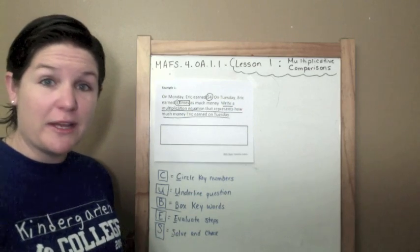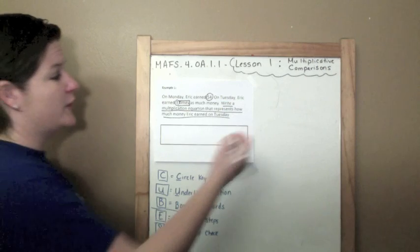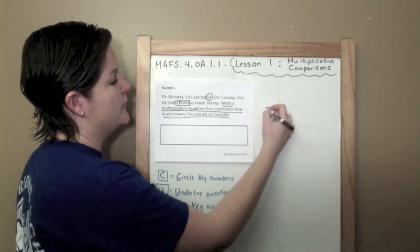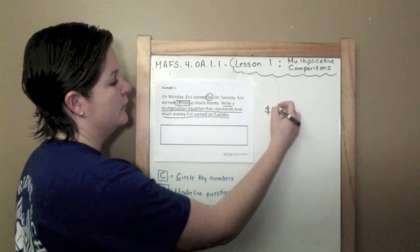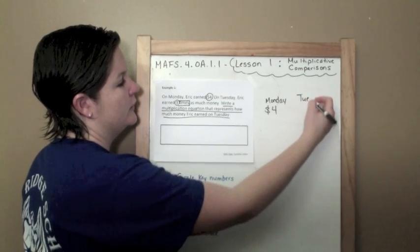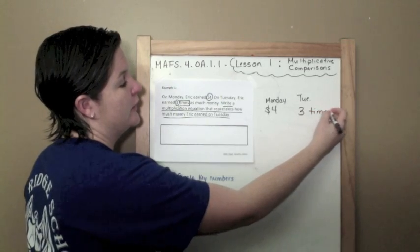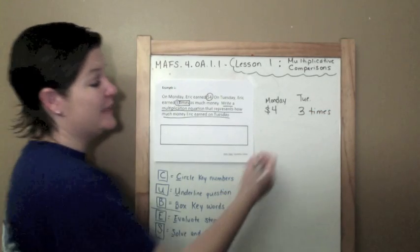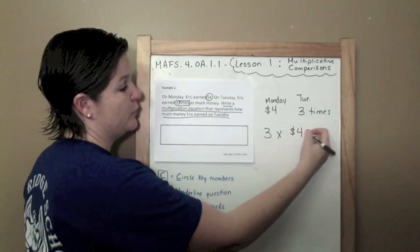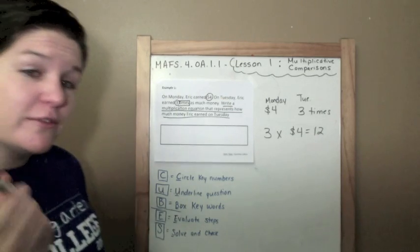Does it say to just write how much money? No. Read carefully. It says write a multiplication equation. So when I see that he earned $4 on Monday, and then on Tuesday he earned three times as much, I know three times really represents three times four dollars, which equals 12. You guys need to be fluent with your multiplication tables in fourth grade.